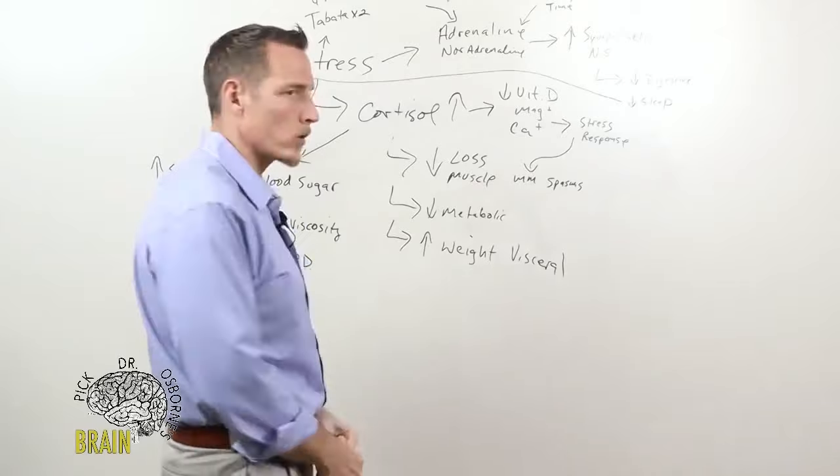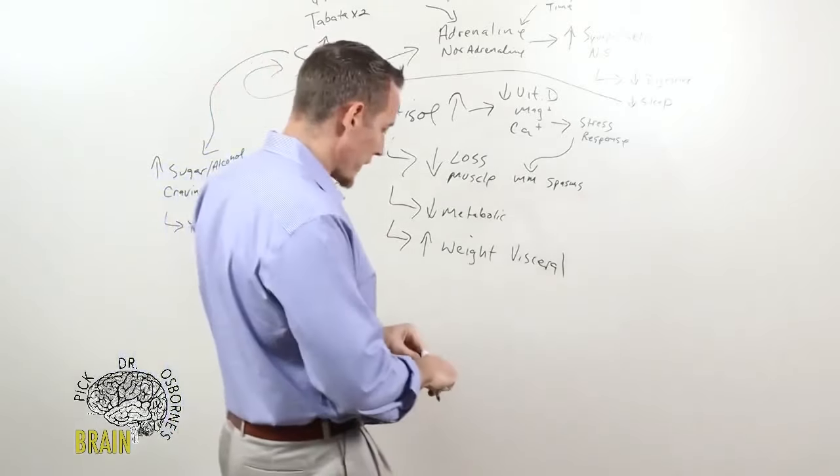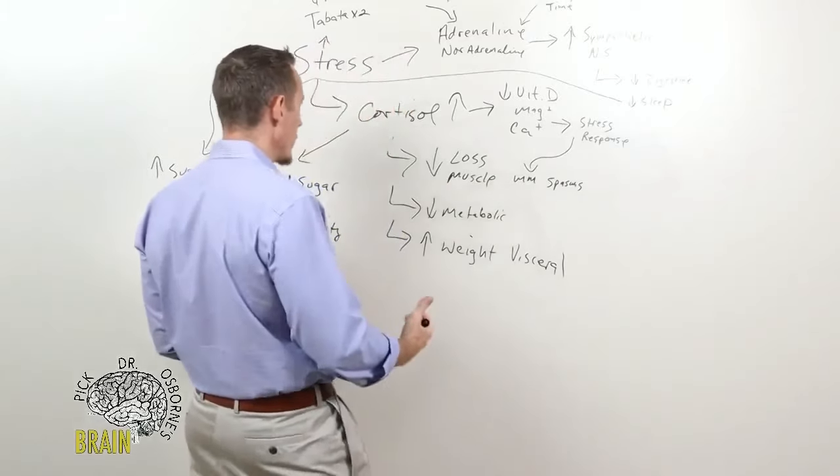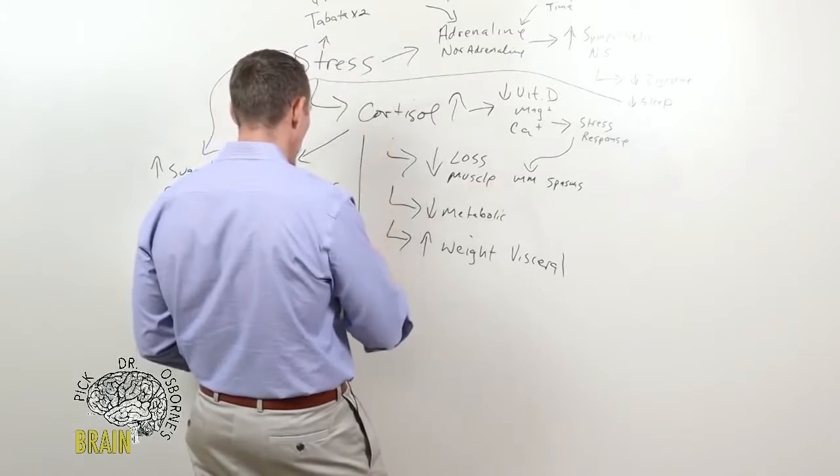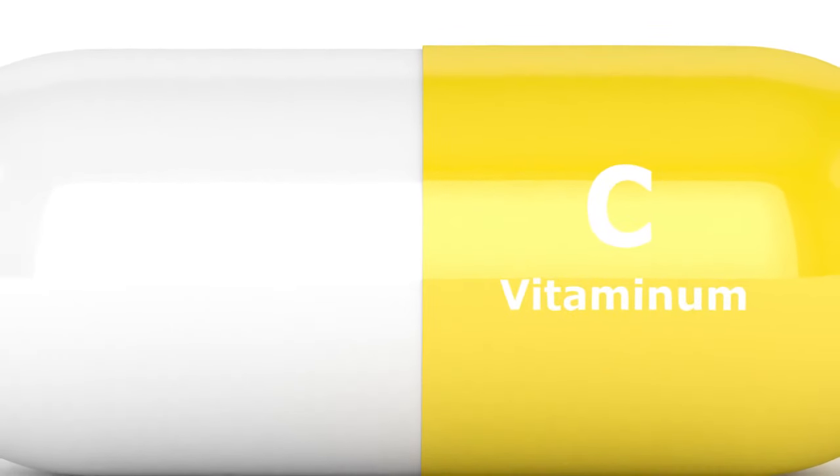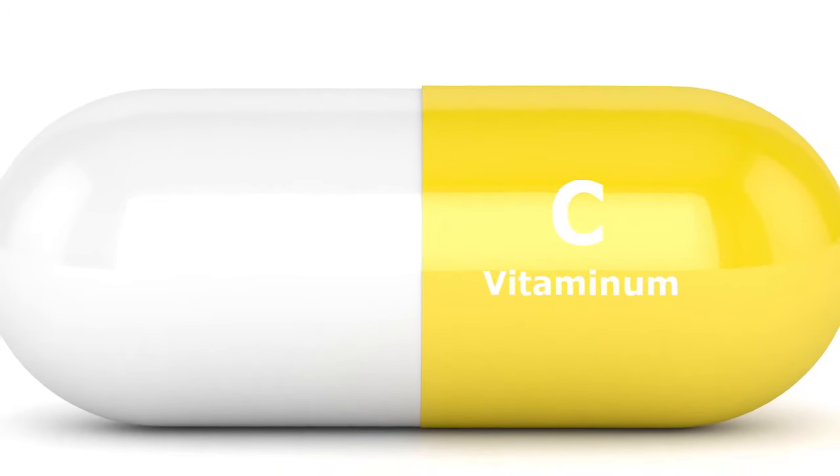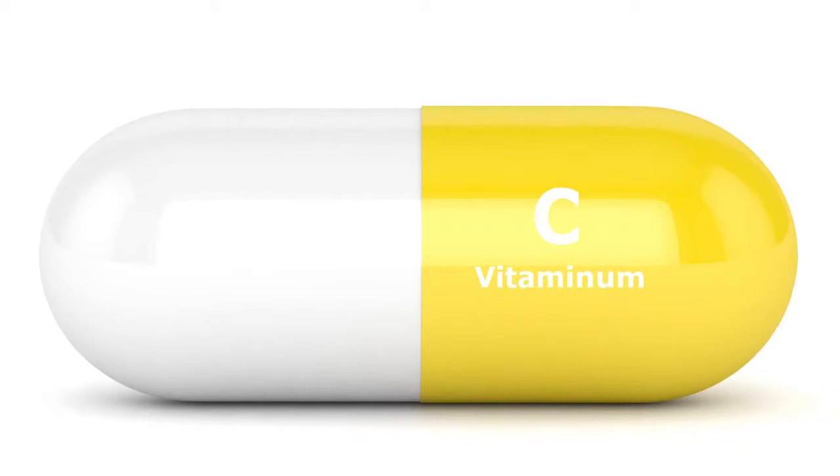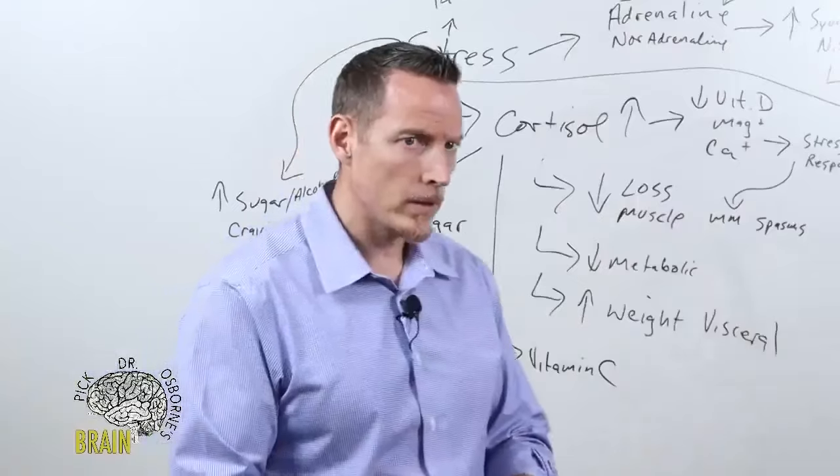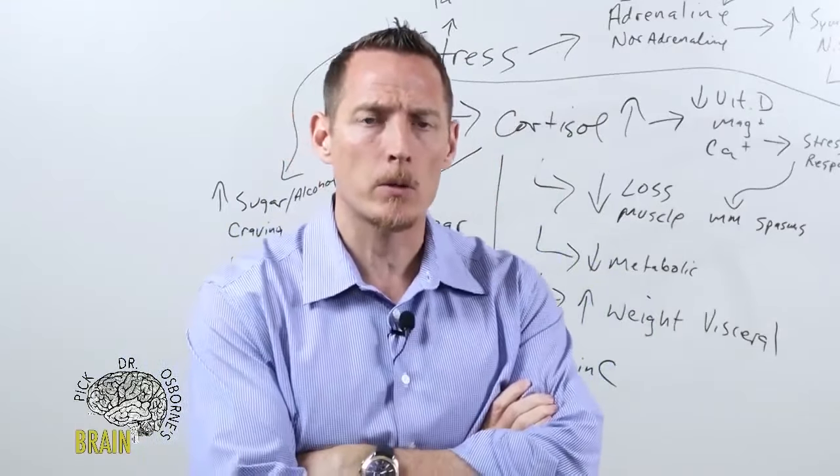Some of my favorite things to get through stress, nutrient support through stress. One of my favorites is the same thing I talked about for immune system support and that is vitamin C. Vitamin C is critical during times of stress. Humans need more vitamin C when they're under chronic stress.